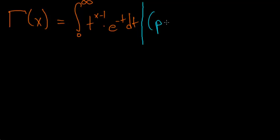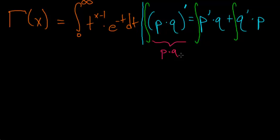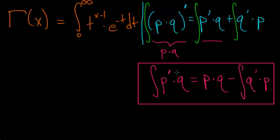If we have the product of two functions p and q and we take their derivative, this is equal to the derivative of p times q plus the derivative of q multiplied by p. Now if we just integrate everything and rewrite the equation, we have our formula. The left-hand side simplifies to p times q, since you're taking the integral of a derivative and you get back the function itself. So if we solve for this integral, we can rewrite the formula as the integral of the derivative of p times q equals p times q minus the integral of the derivative of q multiplied by p. This is our formula for integration by parts, and we can apply this to the gamma function.